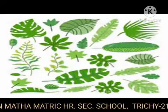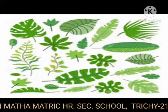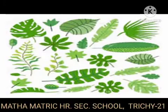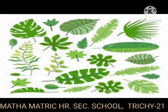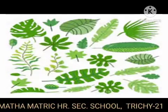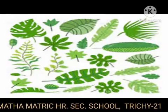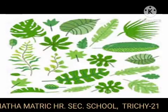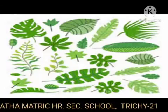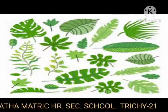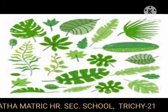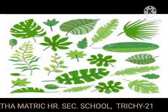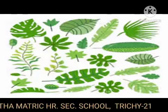Now we are going to see about leaf. Leaves are green, thin, flattened lateral outgrowths of the stem. Leaves are the primary photosynthetic organs and the main site of transpiration. All the leaves of a plant together are referred to as phyllome.